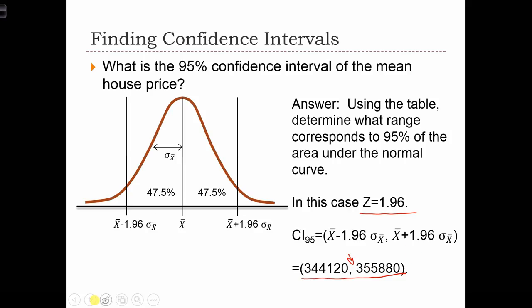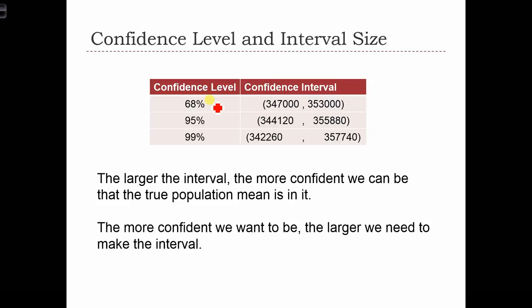So far, we've calculated three confidence intervals. One for 68% confidence, 95%, and 99%. And look what happens to these intervals as they get bigger, as the confidence level gets bigger and bigger. We find that the interval is also getting bigger and bigger as well. So when we only needed to be 68% sure, the confidence interval had a size of 6,000, going from 347 to 353.